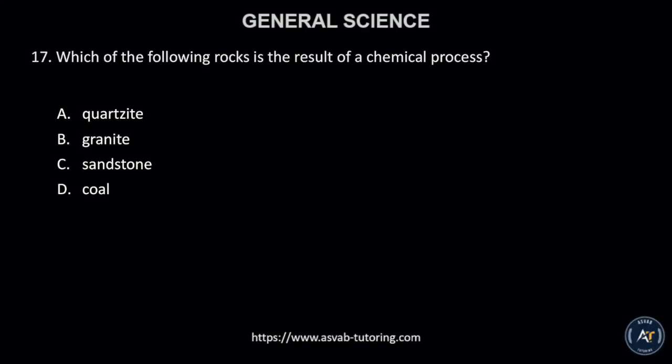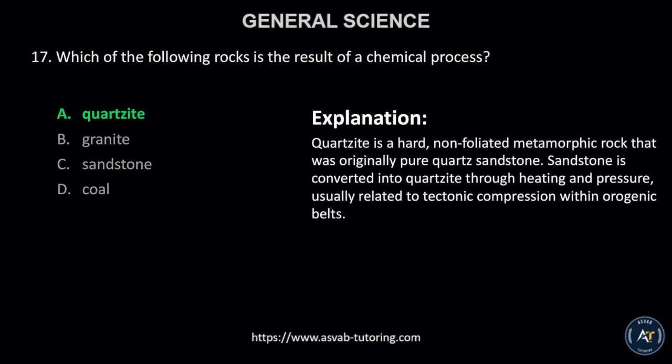Number 17. Which of the following rocks is the result of a chemical process? A. quartzite, B. granite, C. sandstone, or D. coal? The correct answer is letter A, quartzite. Quartzite is a hard, non-foliated metamorphic rock that was originally pure quartz sandstone. Sandstone is converted into quartzite through heating and pressure, usually related to tectonic compression within orogenic belts.